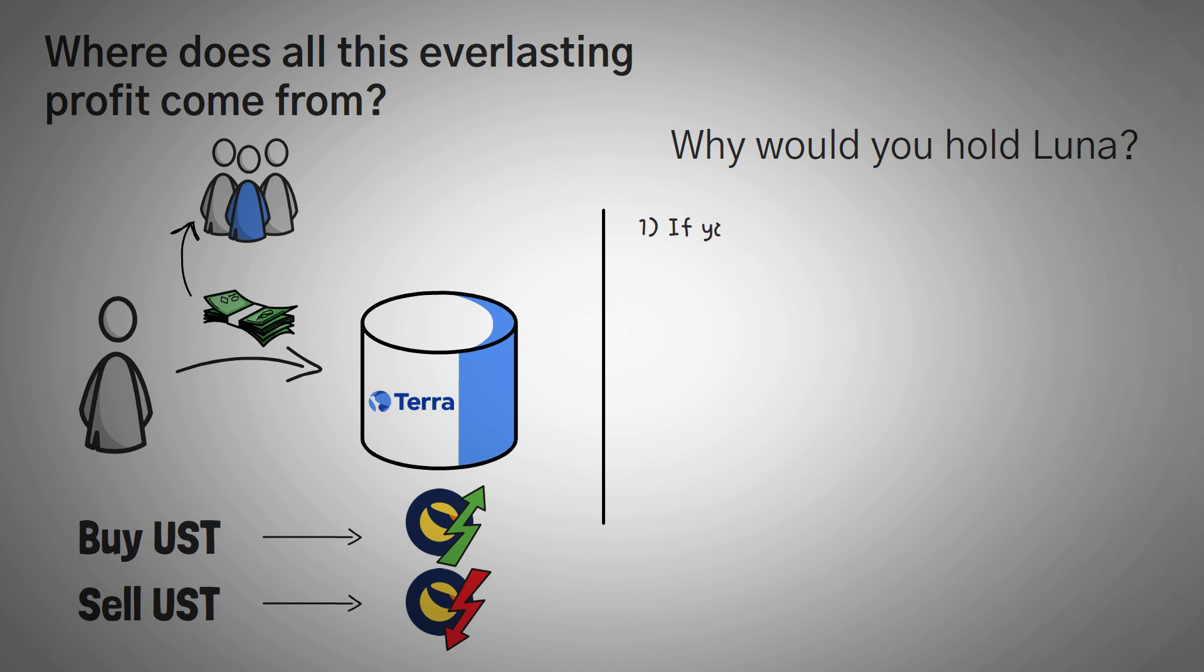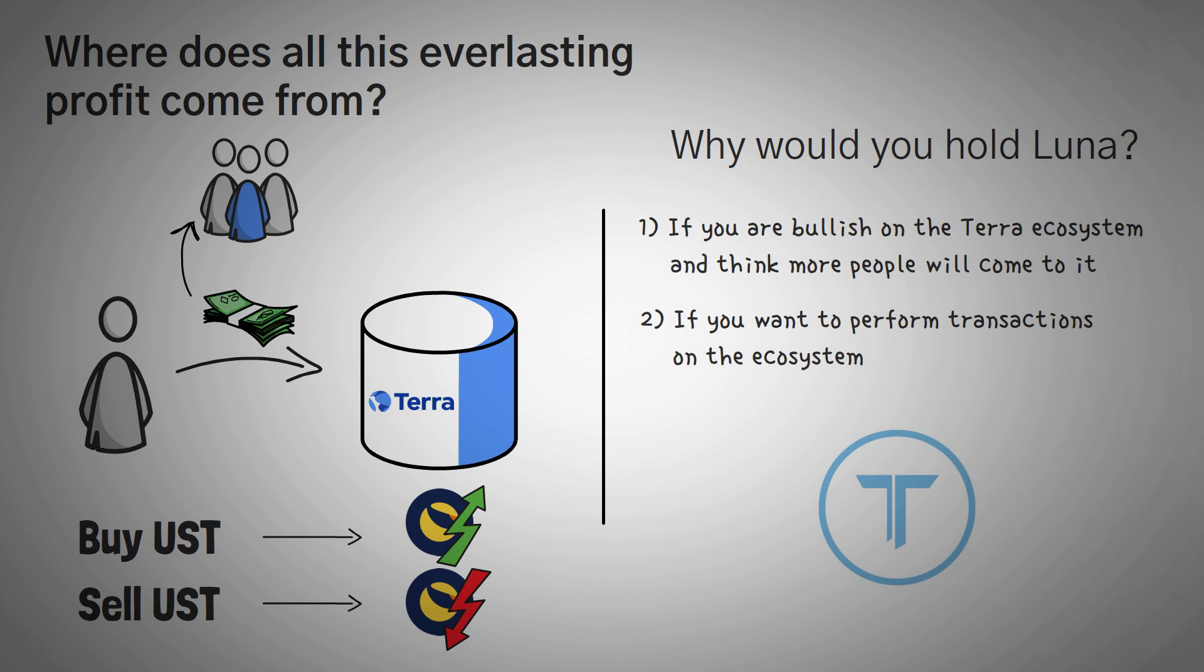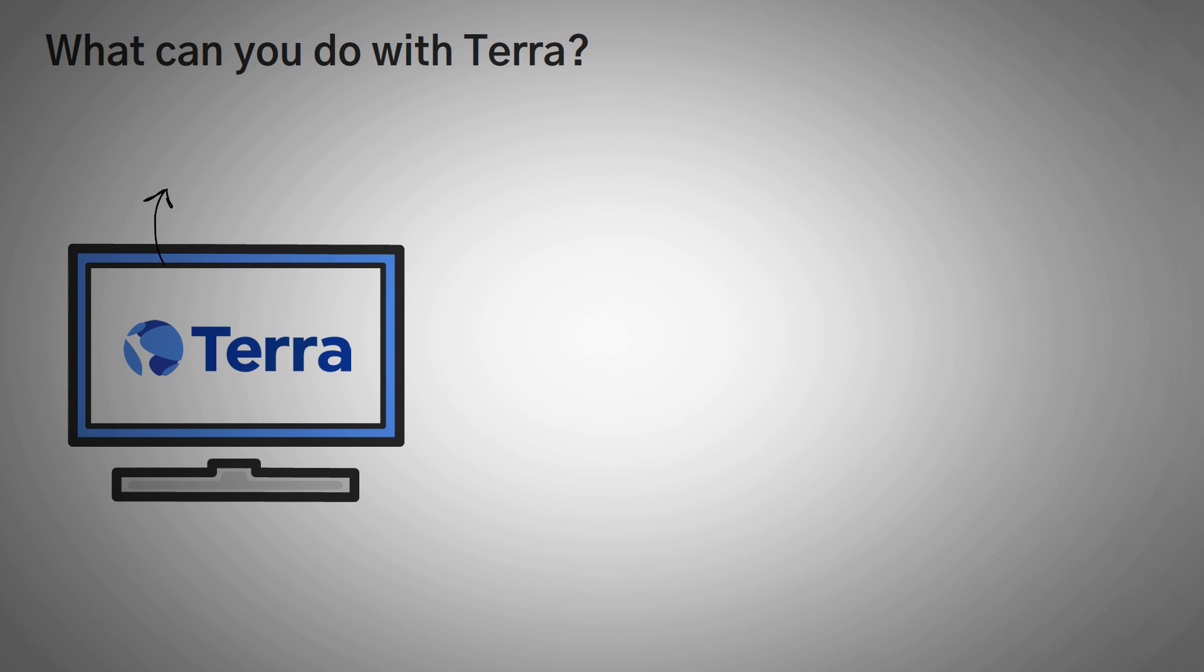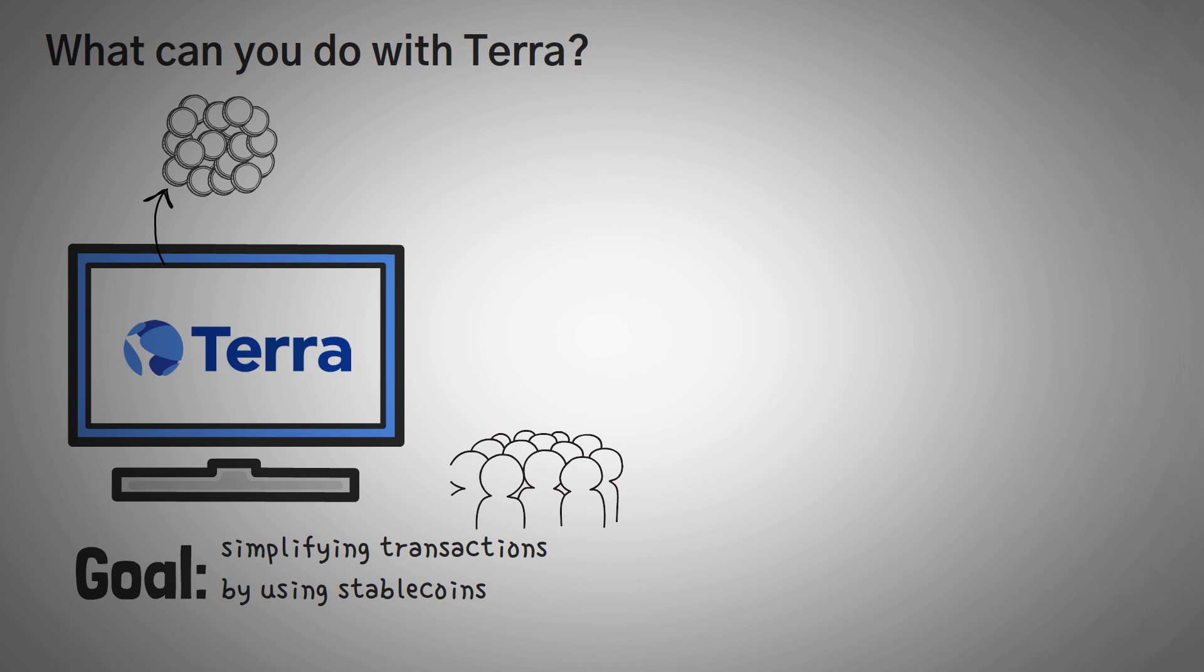Well, you can hold Luna for two reasons. One, if you're bullish on the Terra ecosystem and you think that more people will come into it. And two, if you actually want to do anything on the Terra network, you have to hold Luna, as Luna is the native coin that allows you to do things. So this immediately makes it very different from the death spiral that Titan and Iron finance experienced. Nobody had any reason to buy Titan and Iron other than to participate in the Ponzi scheme. Terra gets its value because people can use the stablecoin for stuff all the way across the ecosystem. Speaking of that, what can you do with Terra?